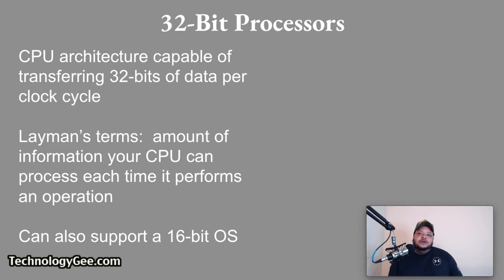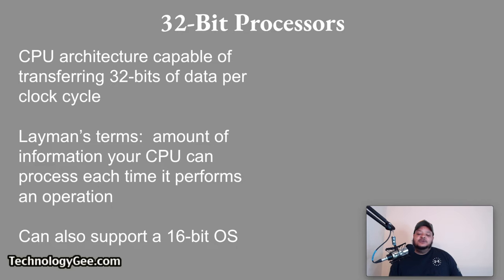A 32-bit processor is a type of CPU architecture capable of transferring 32 bits of data per clock cycle — that's the amount of information your CPU can process each time it performs an operation. You can think of this architecture as a road that's 32 lanes wide, where only 32 bits of data can go through an intersection at a time. A 32-bit processor can also support a 16-bit operating system.